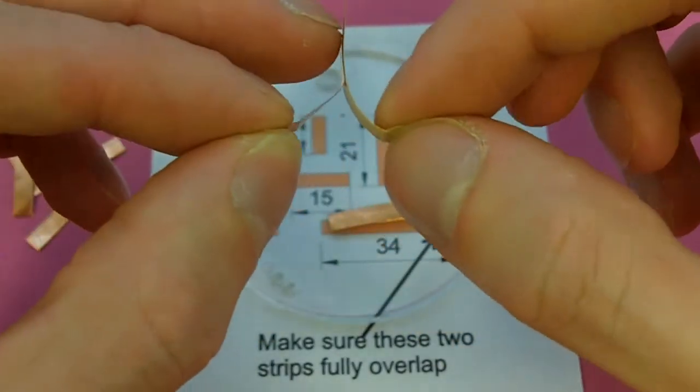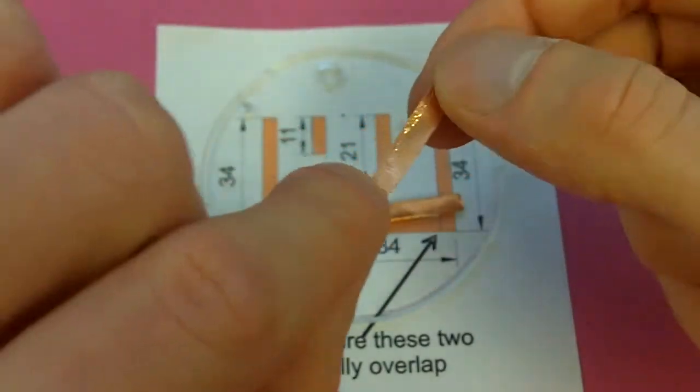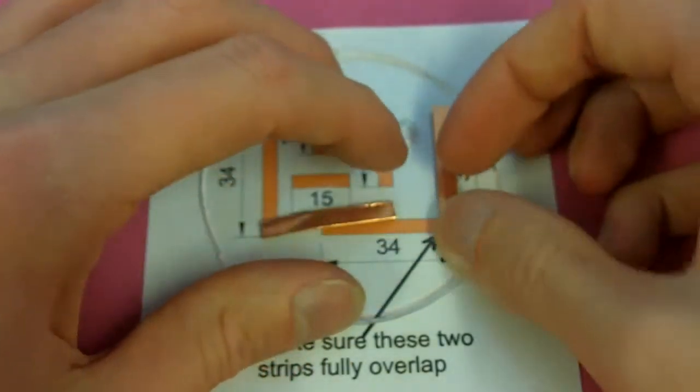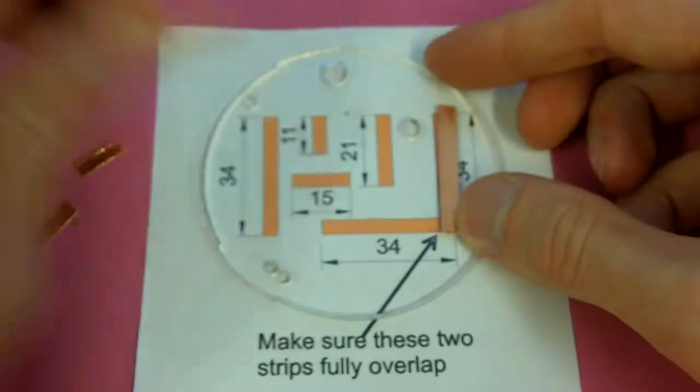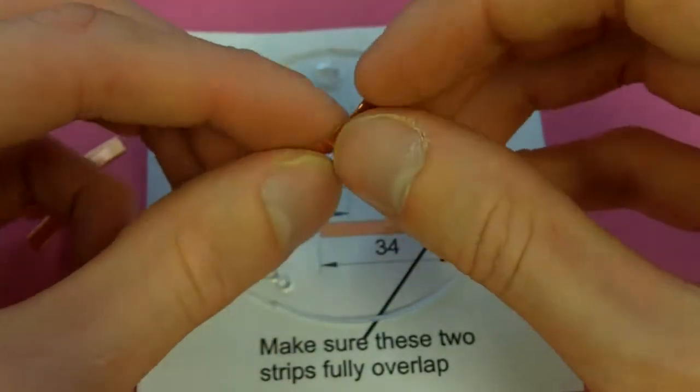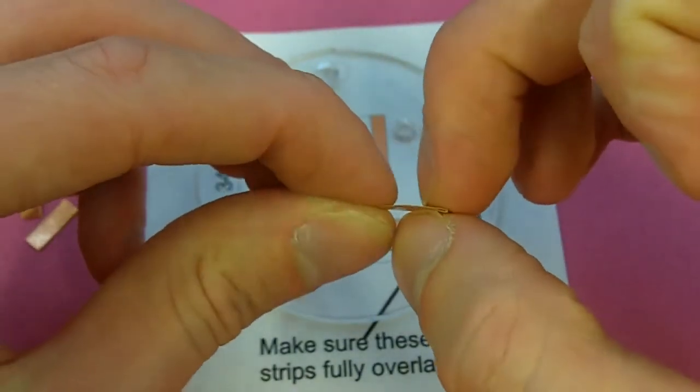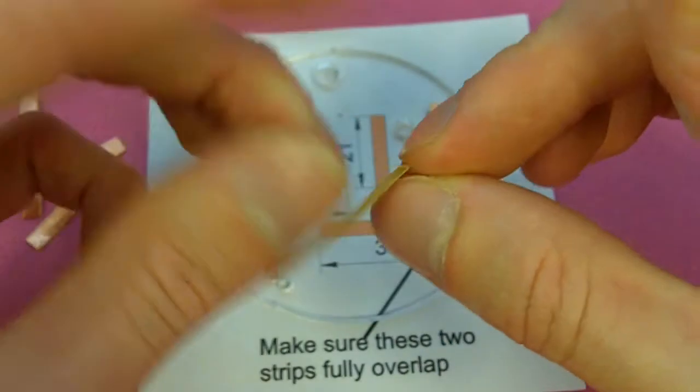And then we'll just peel back the two bits of tape, we'll go into a slight circle, and stick down. Next one, fold it back. Peel it back. Like so.